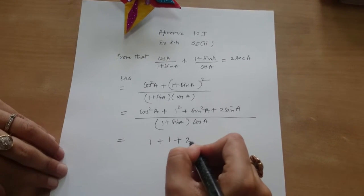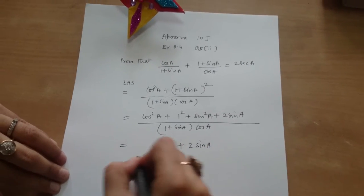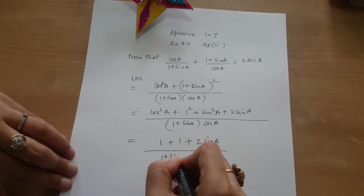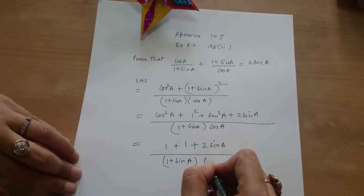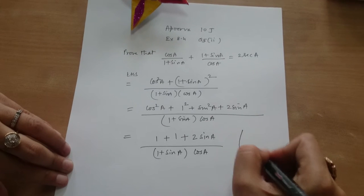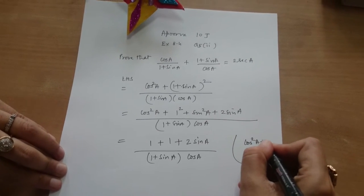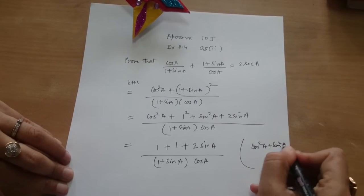That is 1 plus 2 sin A divided by 1 plus sin A into cos A. We have to write down the reason here: cos square A plus sin square A is 1.